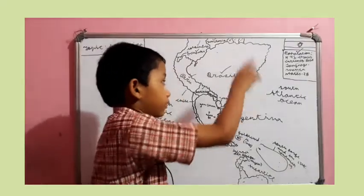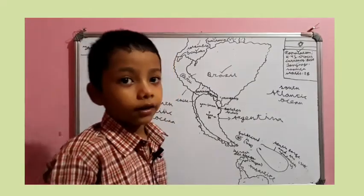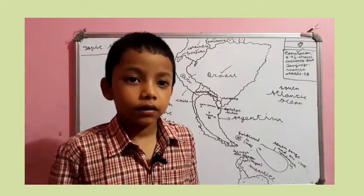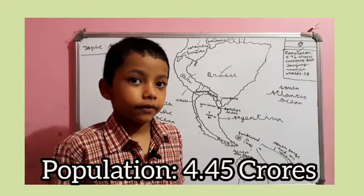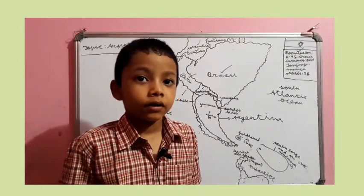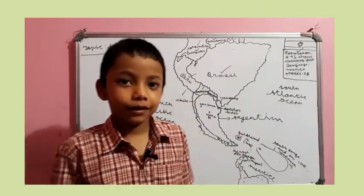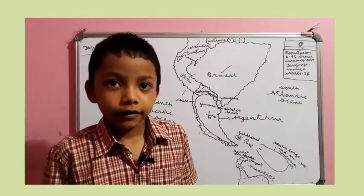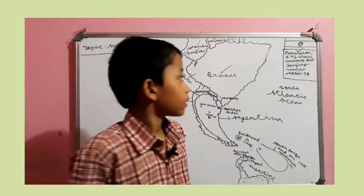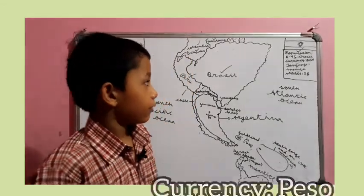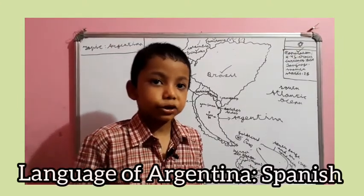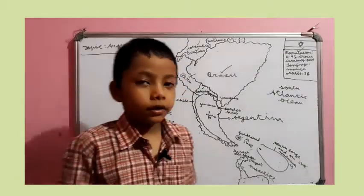Now the facts of Argentina. How much is the population of Argentina? 4.45 crores. What is the currency of Argentina? Peso. What is the language of Argentina? Spanish. And how many states are in Argentina? 28.